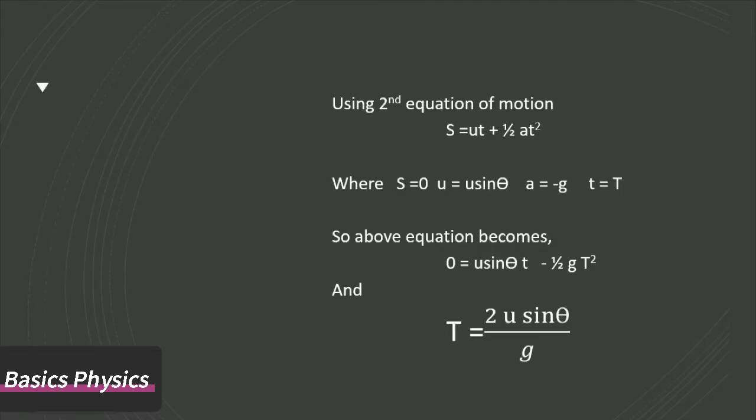U = U sin θ, put a = -g, and replace small t by capital T. Putting values in the above equation, then time of flight is equal to T = 2U sin θ / g.